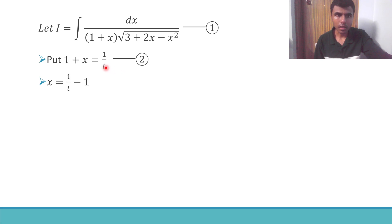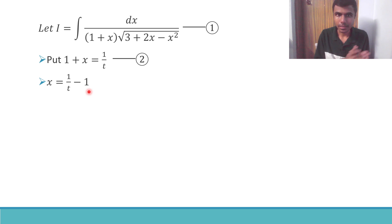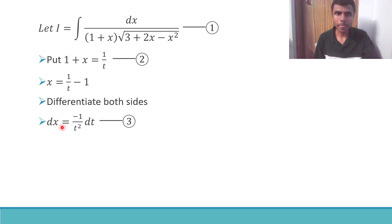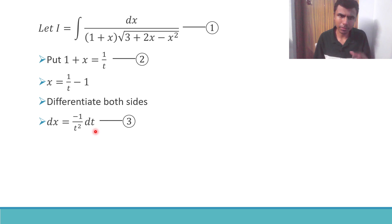Since 1 plus x is 1 by t, send the 1 to the RHS, so I get x is (1 by t) minus 1. Now differentiate both sides, so I get dx equal to minus 1 by t squared into dt — that is, dx by dt is minus 1 by t squared, so dx equals minus 1 by t squared dt.